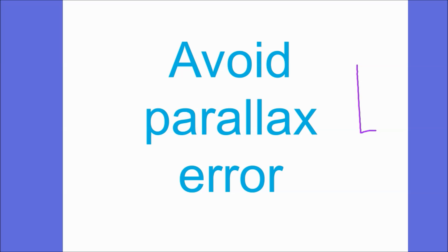So if you've got a measuring cylinder and you look from here at an angle, you're going to find an odd measurement, rather than actually looking from here at eye level, which is where you should be looking. Parallax error can be avoided, and the great thing about the phrase 'avoid parallax error' is that just writing it is often enough to get you the mark.